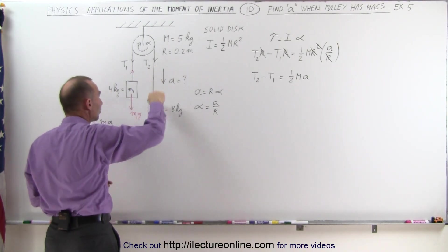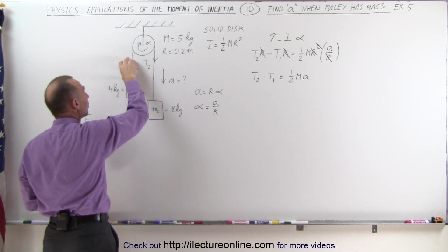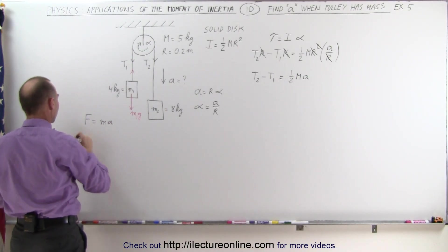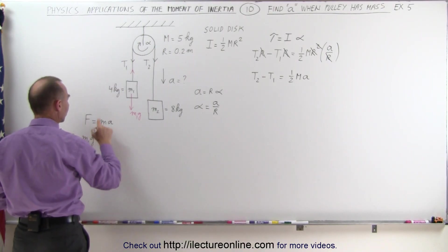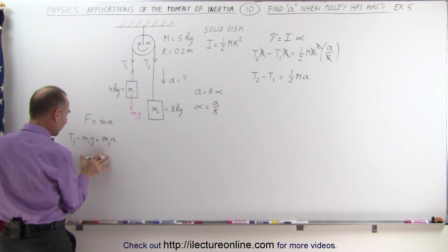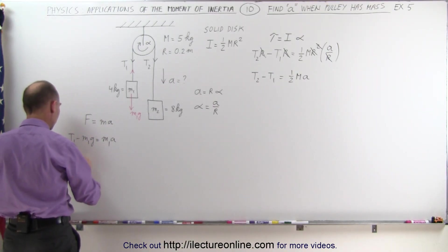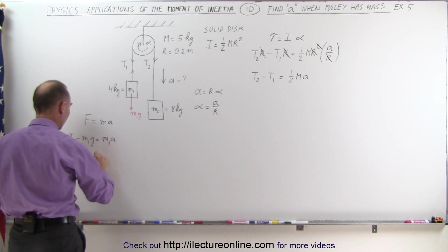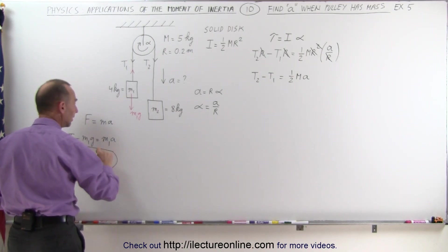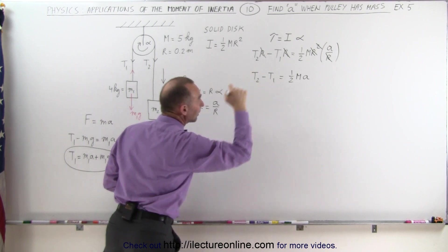Since we know the acceleration is this way, we assume that T1 is larger than M1G. Therefore, the net force is equal to T1 minus M1G equals the mass of that, which is M1 times acceleration. Solving this for T1, we get T1 is equal to M1A plus M1G. And this can then be substituted in this equation right here to eliminate T1.